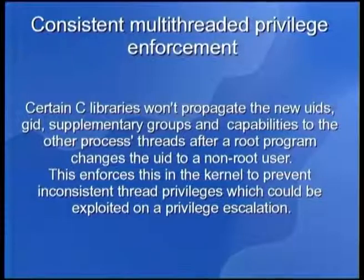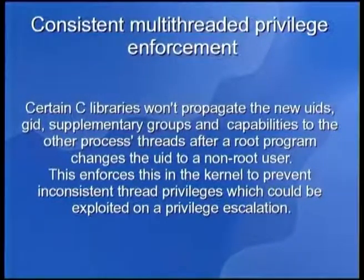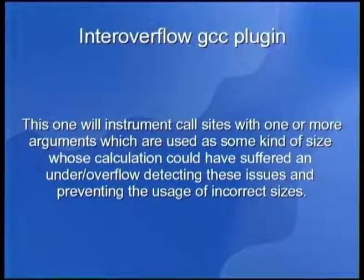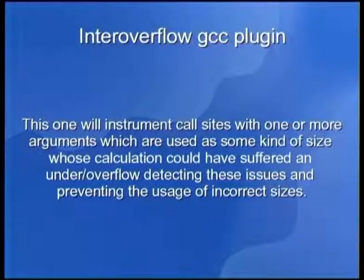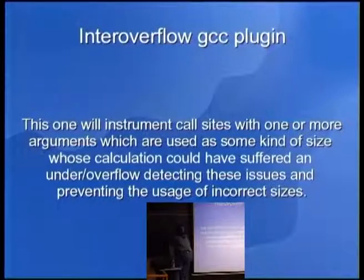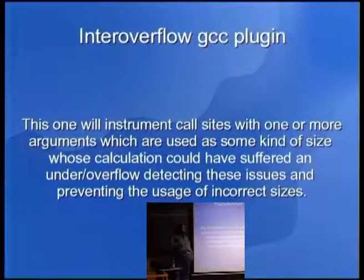We also have consistent multi-threaded privilege enforcement. If you use glibc you don't need to worry about this, but if you use alternative libcs like uClibc, you need this to ensure that when you do a clone call, all threads will have the same privileges. And we have the integer overflow GCC plugin — it tries to detect when overflows are going to happen or are likely to happen, and when it detects that, it tries to prevent those overflows like the memory leaks we explained earlier.